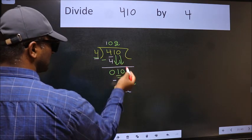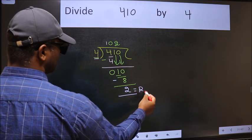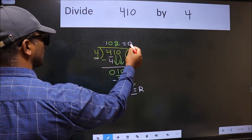No more numbers to bring it down, so we stop here. This is our remainder and this is our quotient.